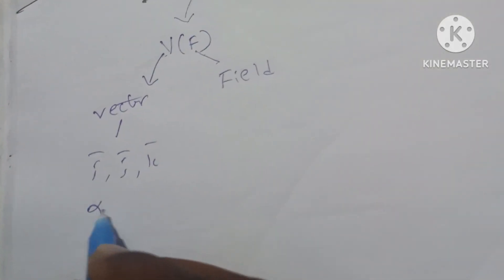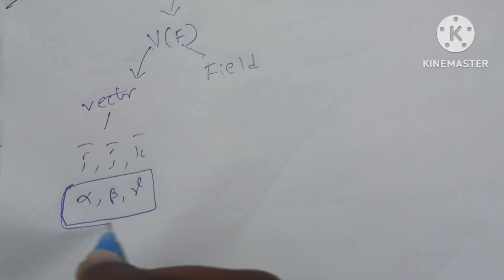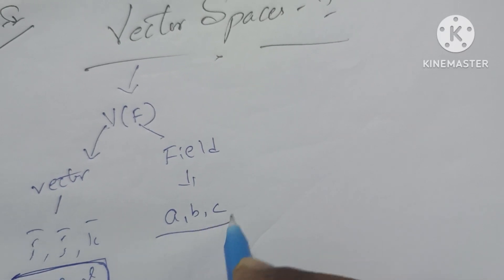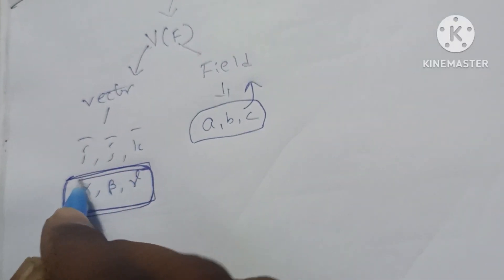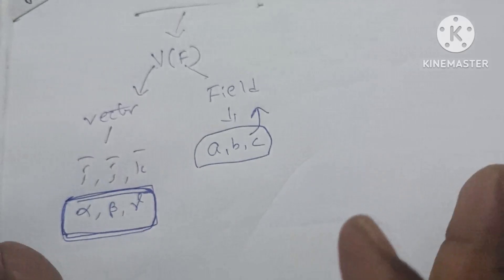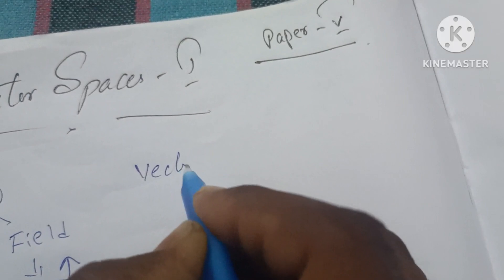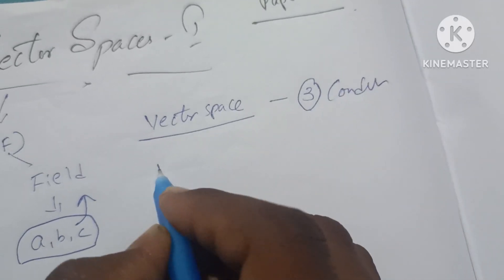In this chapter, we will use Alpha, Beta, Gamma to denote vectors — we call vectors Alpha, Beta, Gamma. Vector space has mainly 3 conditions.